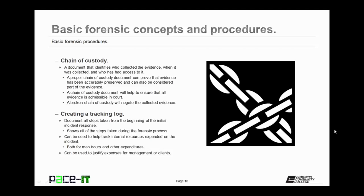All evidence requires a chain of custody — a document that identifies who collected the evidence, when it was collected, and who has had access to it since it was collected. A proper chain of custody document can prove that evidence has been accurately preserved, and the chain of custody can also be considered as part of the evidence itself. A chain of custody document will help to ensure that all evidence is admissible in court. A broken chain of custody will negate the collected evidence.